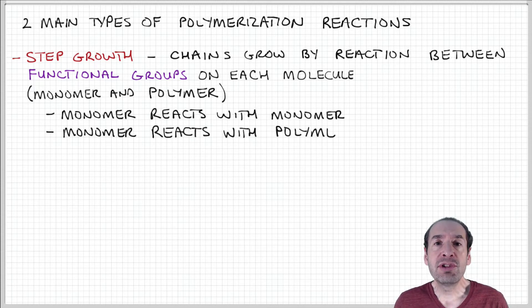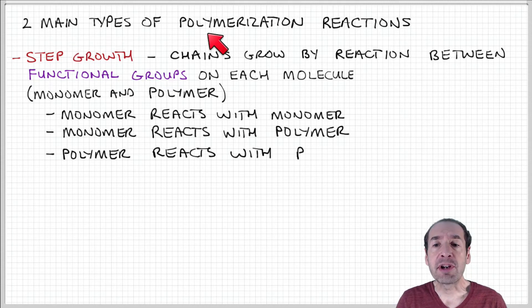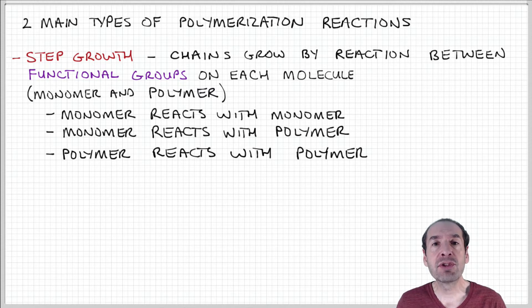I'm going to focus on two main types of polymerization reactions in this part of the course. The first type is called step growth polymerization. This is a process by which chains grow by reactions or interactions between functional groups on each of the molecules in the polymer chain.